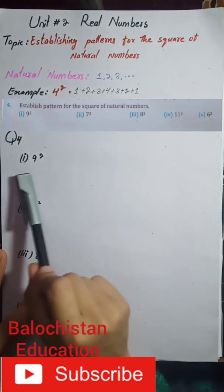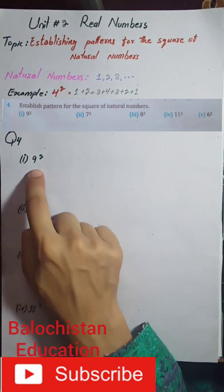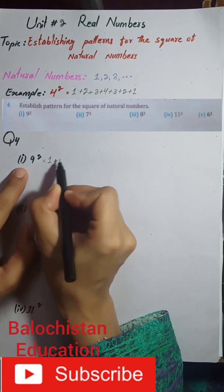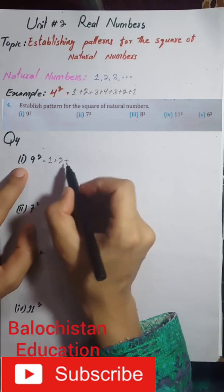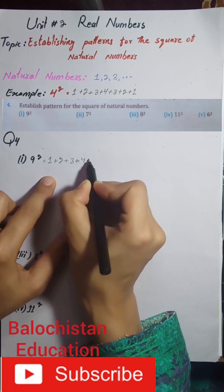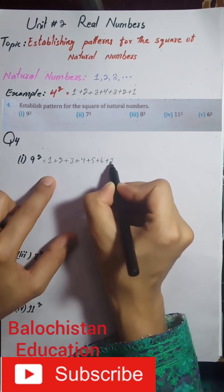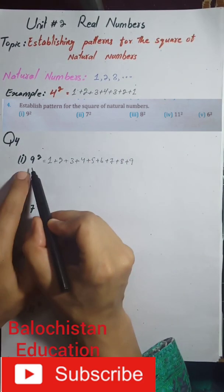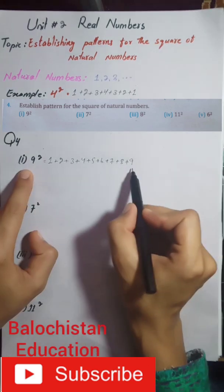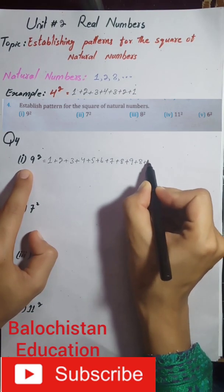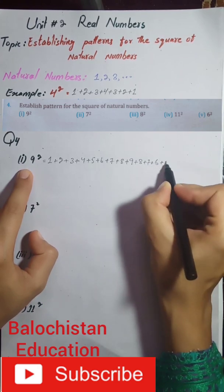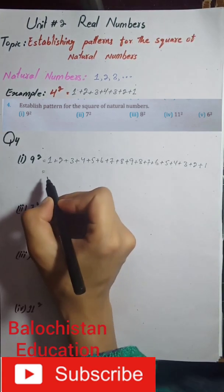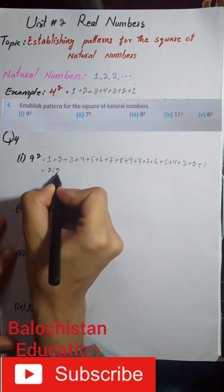We will establish a pattern for the square of 9. We start from 1 plus 2 plus 3 plus 4 plus 5 plus 6 plus 7 plus 8 plus 9 — since we have the square of 9, we go up to 9 — and then go back down: plus 8 plus 7 plus 6 plus 5 plus 4 plus 3 plus 2 plus 1.